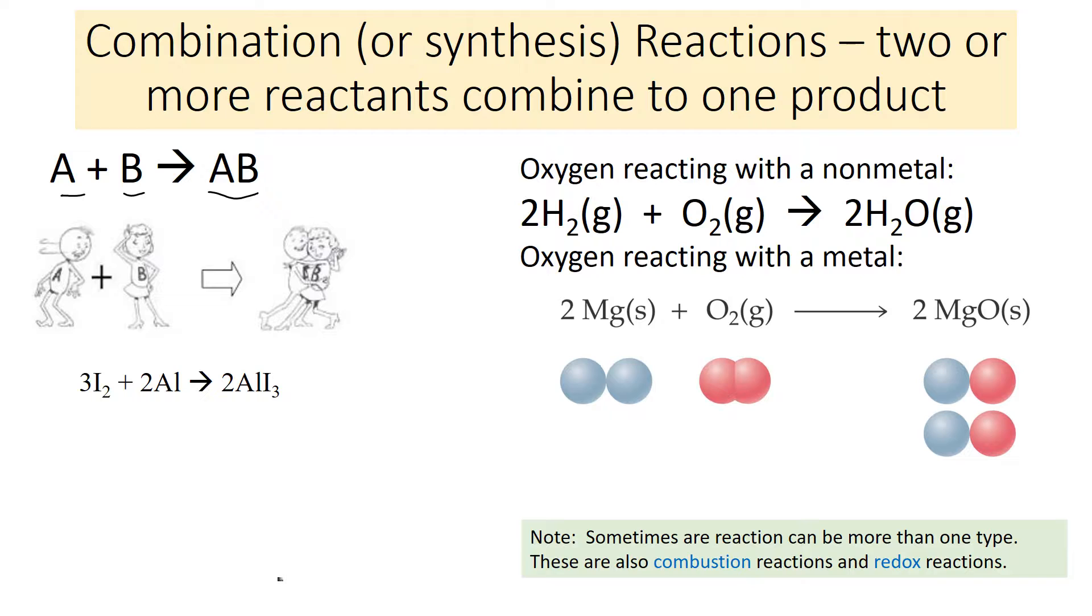An example of that is to make water out of hydrogen and oxygen. And that's an example of a non-metal reacting with oxygen. Oxygen reacts with both metals and non-metals. The next example is a metal reacting with oxygen. So you can see magnesium will react with oxygen to make magnesium oxide.